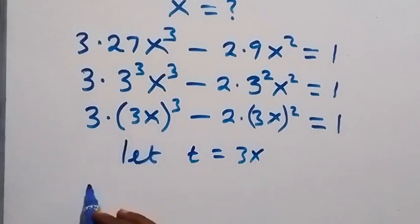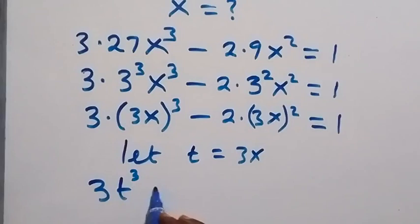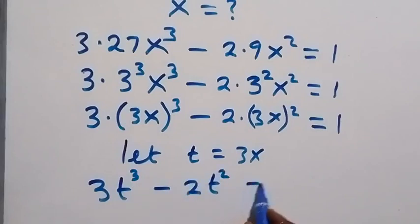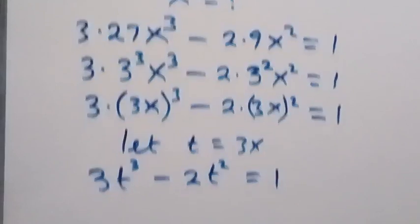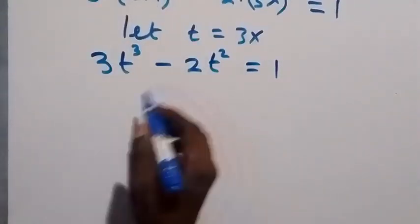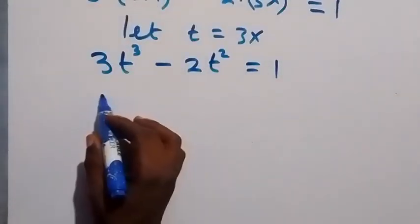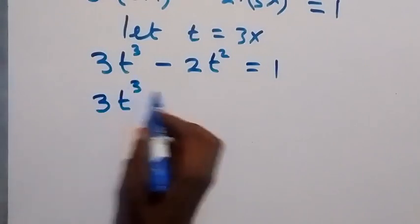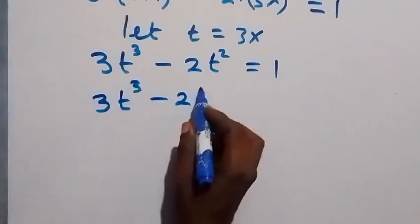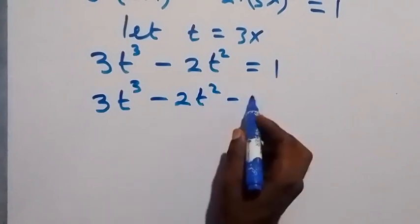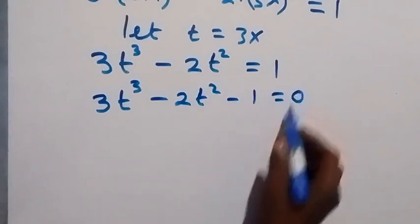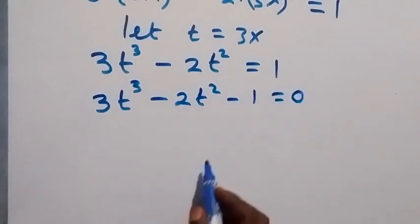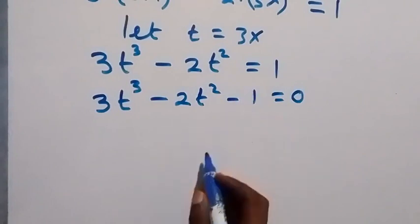Substituting t for 3x, this becomes 3t raised to power 3 minus 2t squared equals 1. Taking 1 to the other side to form an equation gives us 3t cubed minus 2t squared minus 1 equals 0.